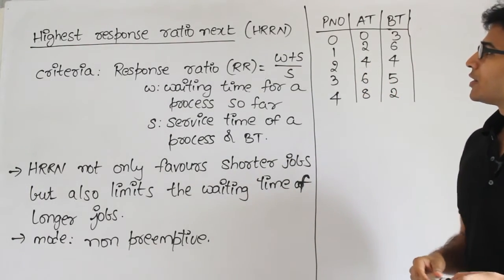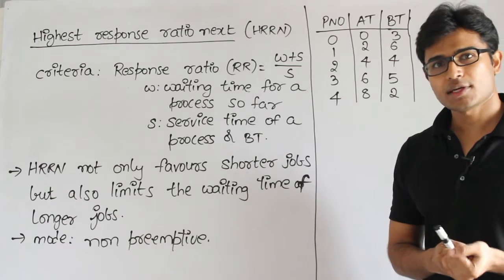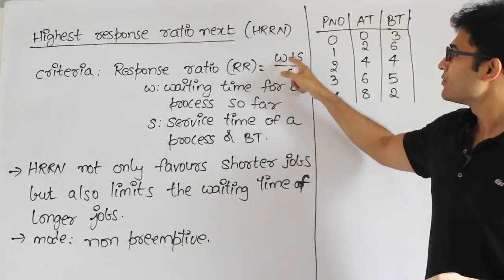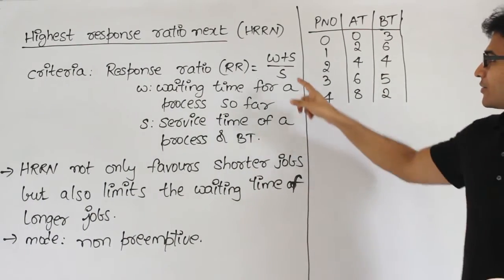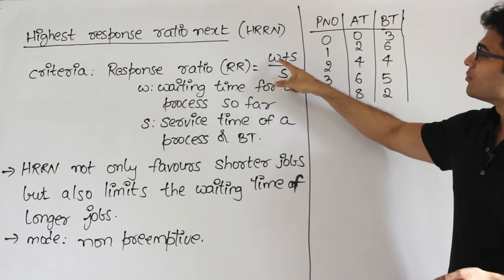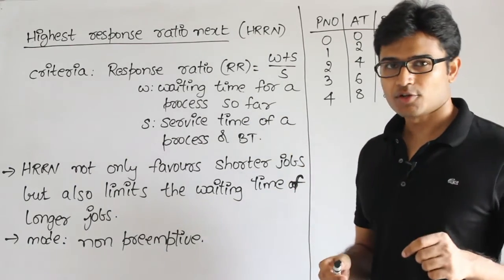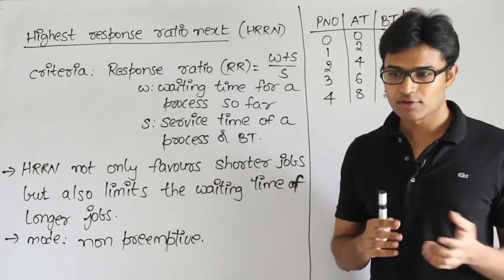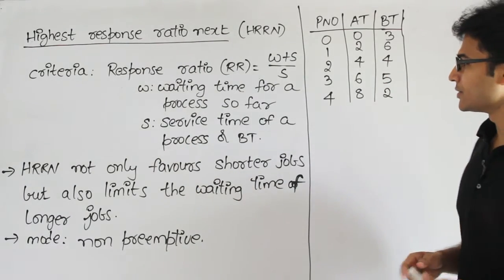Here we are not purely depending on the burst time - we depend on burst time as well as waiting time. Whenever the burst time is less, that process will have a higher response ratio value. But also, if a process has been waiting for a long time, it will get a higher value. So if a job with a lot of burst time has been waiting long, that will also get scheduled.